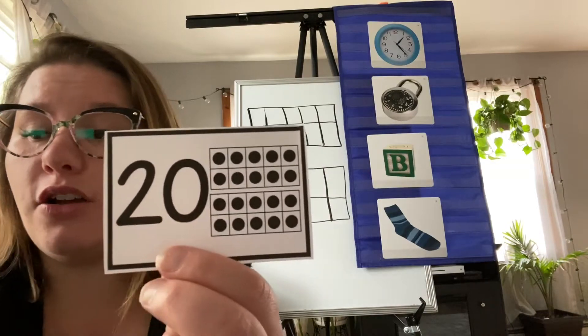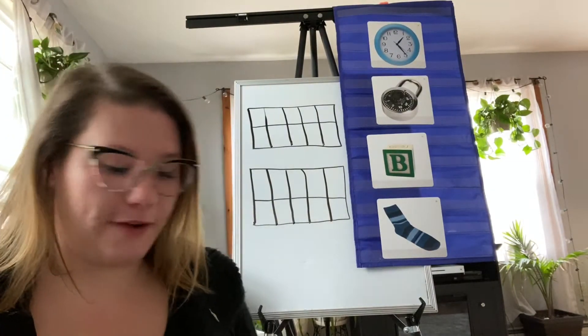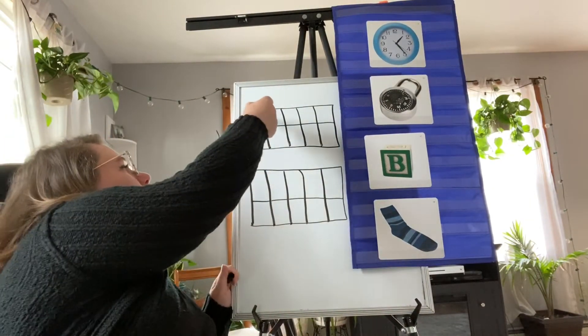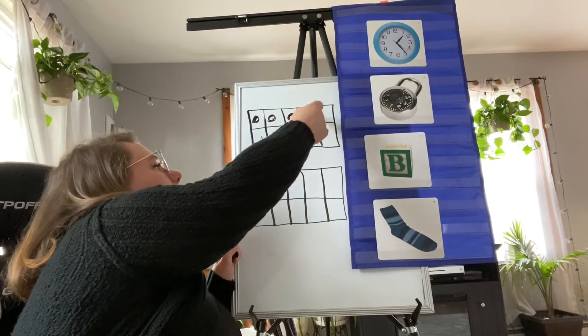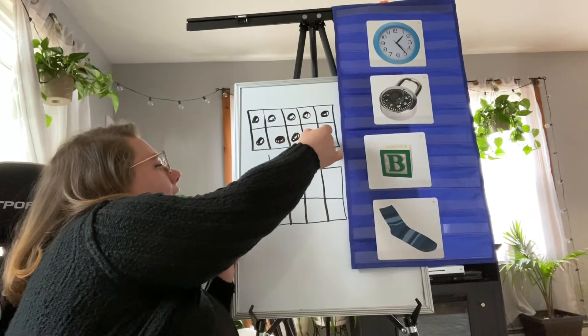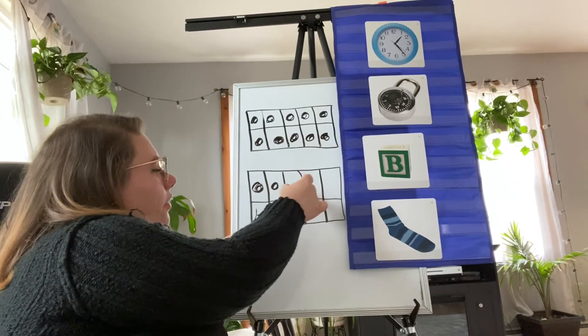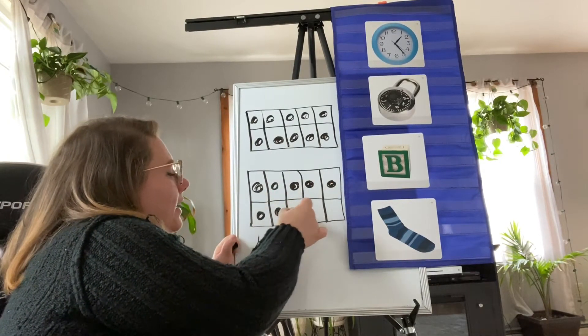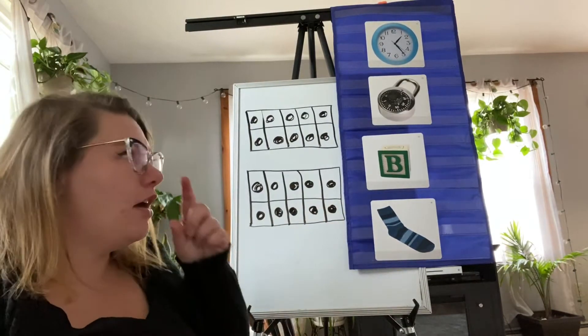We're in the 20s now. All 20s start with two. Two and a zero is two tens and zero ones: 20. All right, we're gonna write it on our board in our double 10 frame. Let's count. Ready? Count with me. One, two, three, four, five, six, seven, eight, nine, ten. Let's go to the next one. Eleven, twelve, thirteen, fourteen, fifteen, sixteen, seventeen, eighteen, nineteen, twenty.